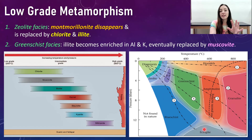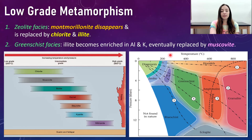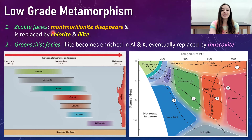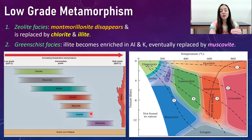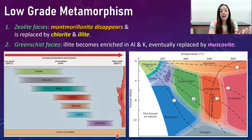The amphibolite, granulite, and eclogite facies are higher-grade. During the zeolite facies — this blue band here — montmorillonite disappears and is replaced by chlorite and illite. Then in the greenschist facies, illite becomes enriched in aluminum and potassium and is eventually replaced by muscovite. Looking at the bottom left figure, there's a chlorite and muscovite band, and then a series of other mineral bands with increasing grade or facies — that is, increasing temperature and pressure.